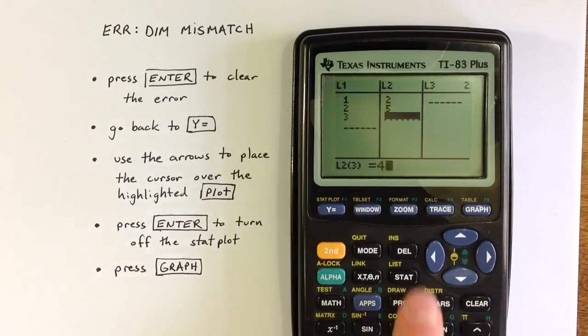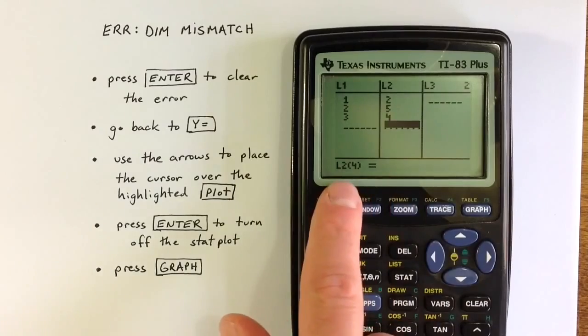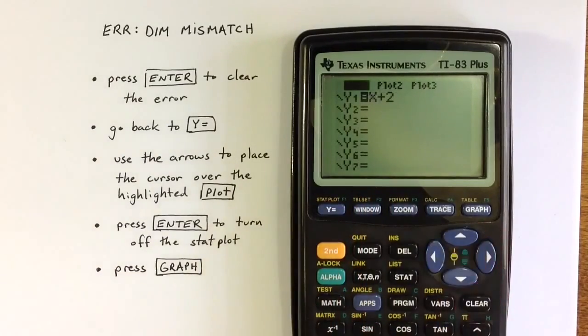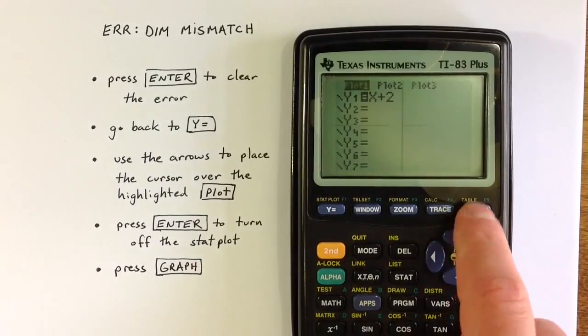So if I fill in an additional element in list 2, now the elements are paired together. So if I turn plot 1 back on and now create the graph,